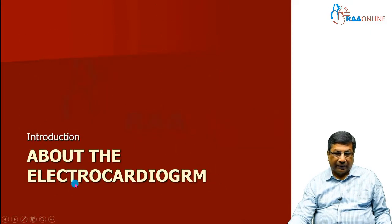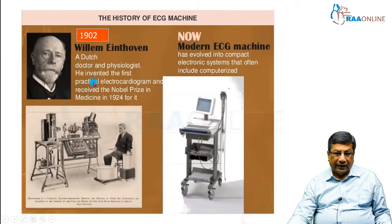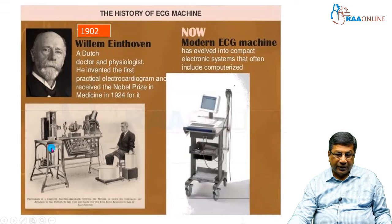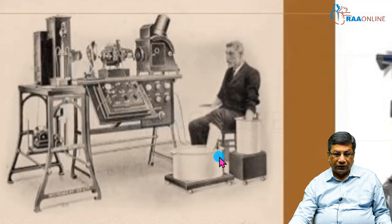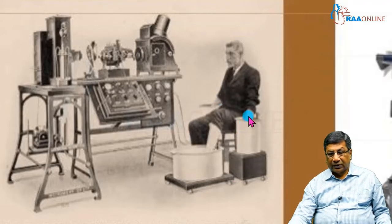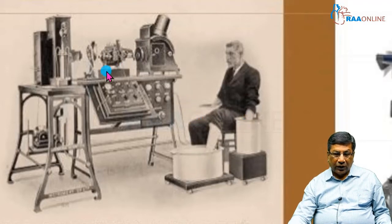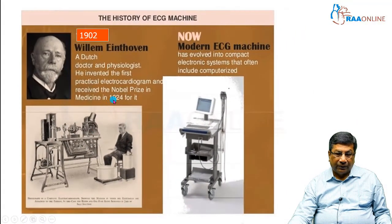We cannot begin a course on electrocardiogram without paying tribute to the wonderful Dutch scientist and doctor Willem Einthoven, who gave us this investigation in 1902 through a big machine. This was the first ECG machine Einthoven devised. His assistant had to put his hands in a huge pot of saline, which served as electrodes in those days. It took two and a half hours to record an electrocardiogram and two and a half days to interpret it. For this wonderful discovery, he received the Nobel Prize in 1924.